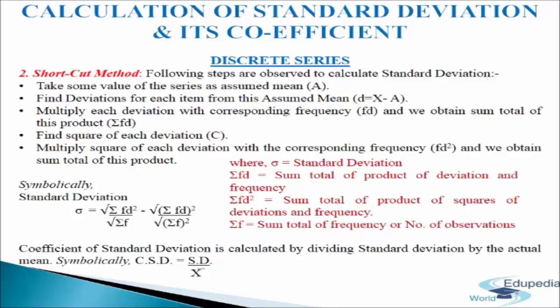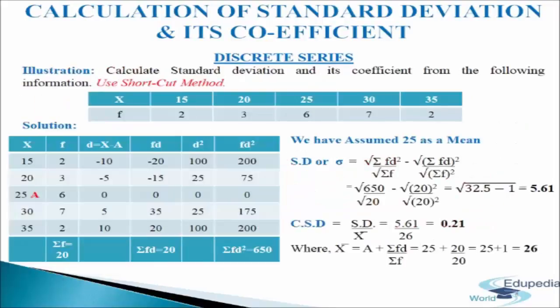Use the following formula to calculate standard deviation: the square root of sigma fd square divided by sigma f minus the quantity sigma fd divided by sigma f, squared. Where sigma fd equals the sum total of the product of deviation and frequency, sigma fd square equals the sum total of the product of squared deviations and frequency, and sigma f equals the sum total of frequency. The coefficient of standard deviation is calculated by dividing standard deviation by actual mean: CSD equals SD divided by mean.